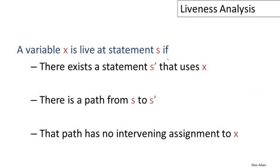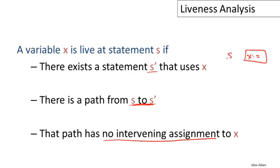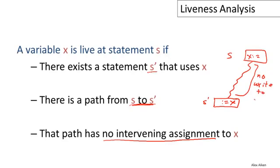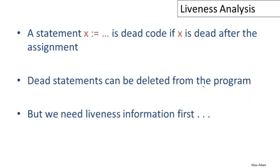To summarize: a variable X is live at a statement S if there exists some statement S prime that uses X, and there is a path from S to S prime with no intervening assignment to X on that path. So there needs to be an assignment to X at some statement S, and some path through the program that reaches a read of X at statement S prime, with no write to X along that path. If this situation arises, then we say the value written at statement S is live.